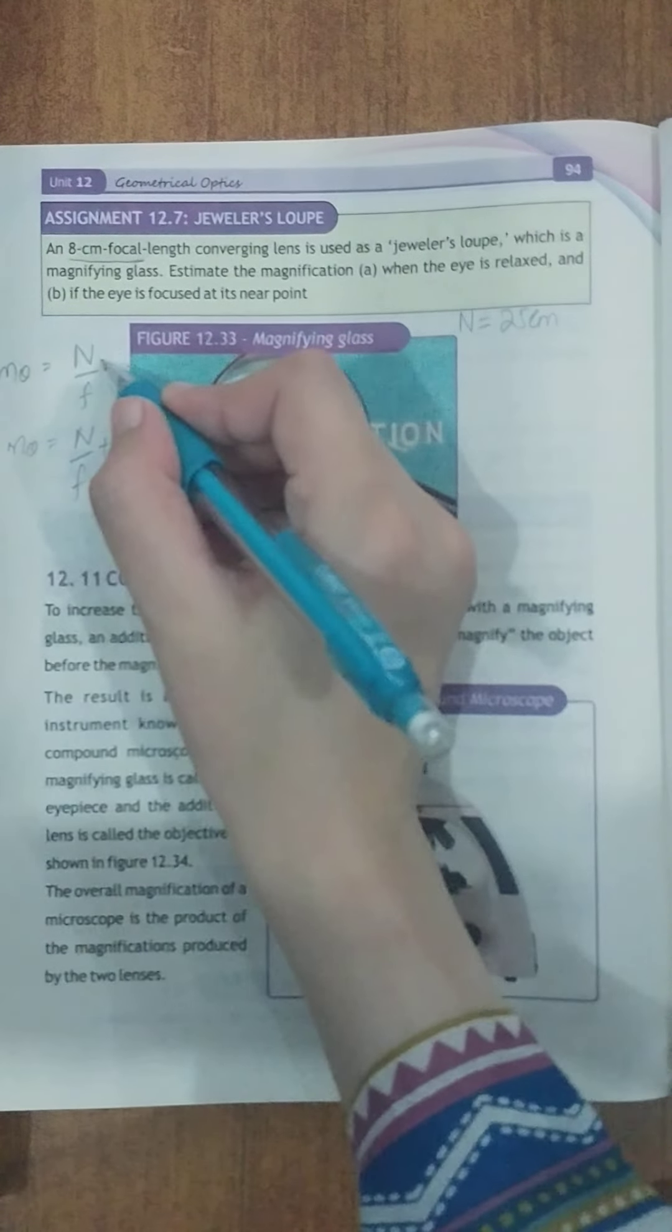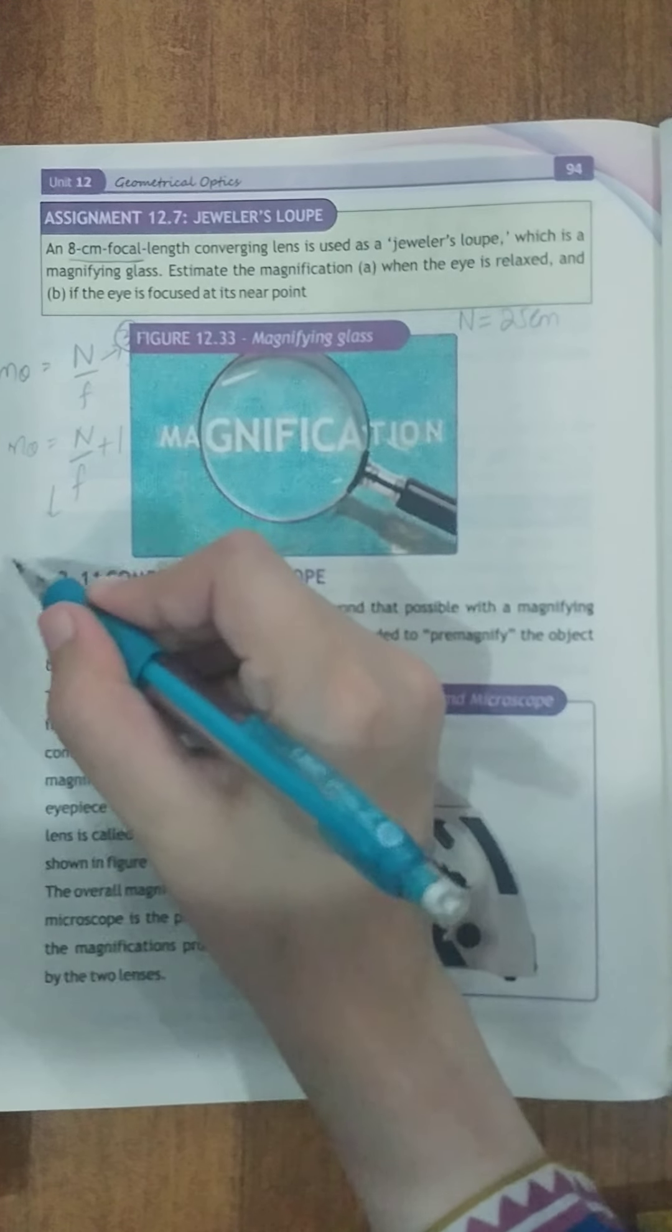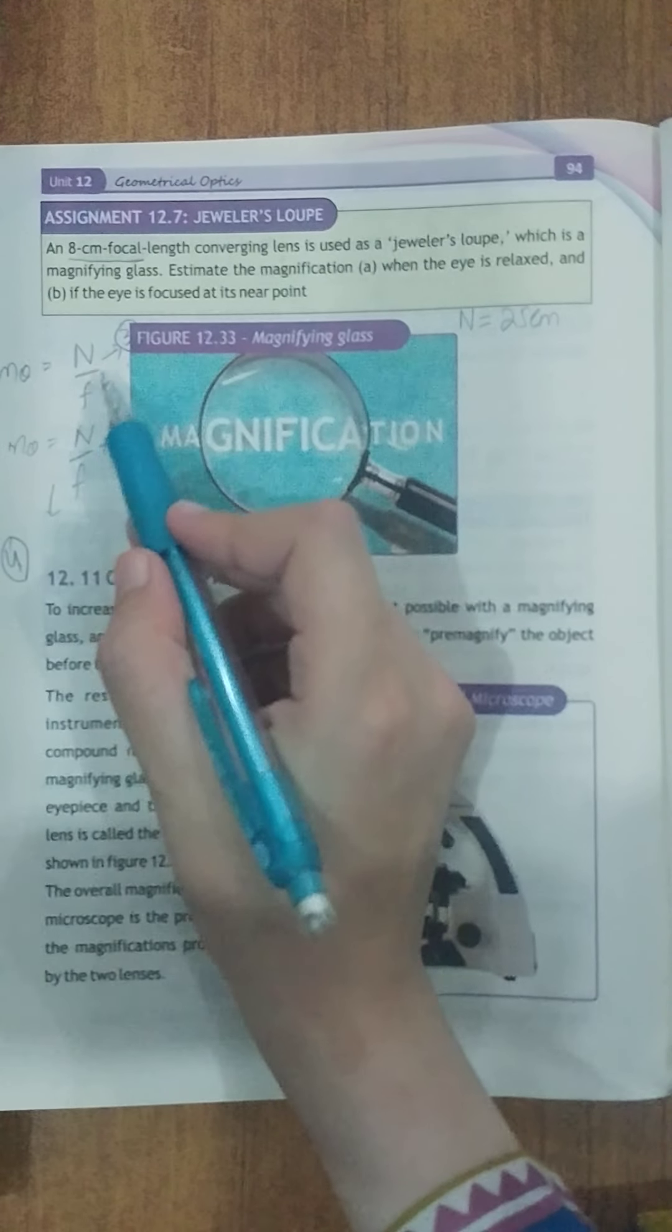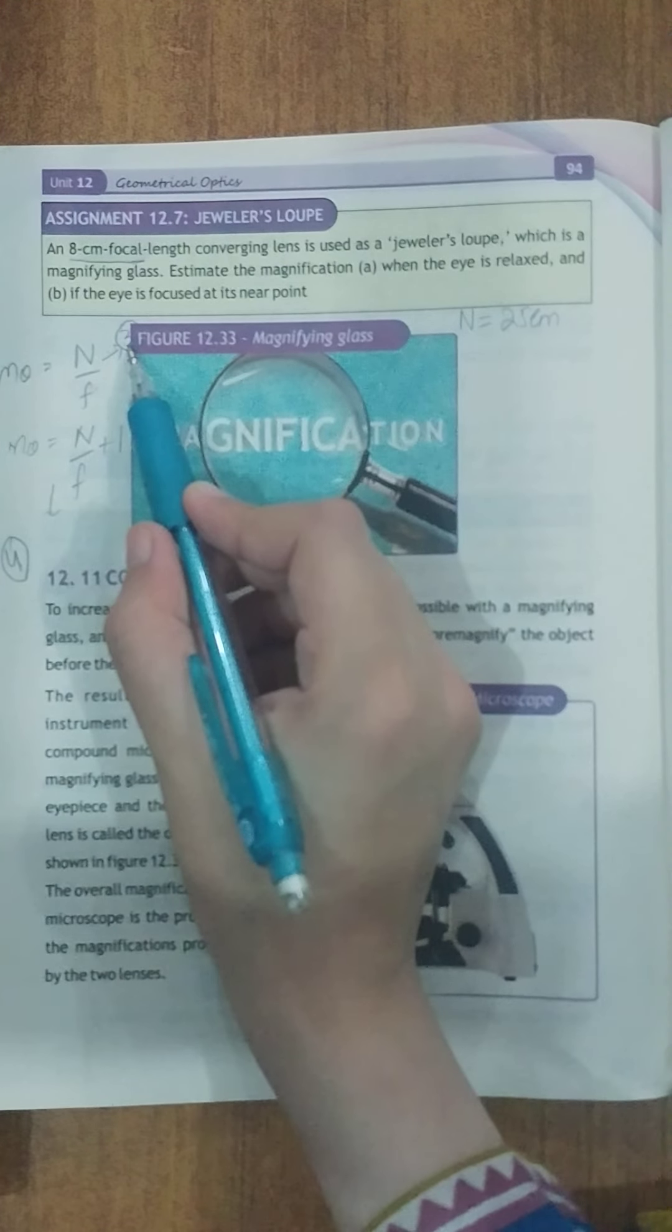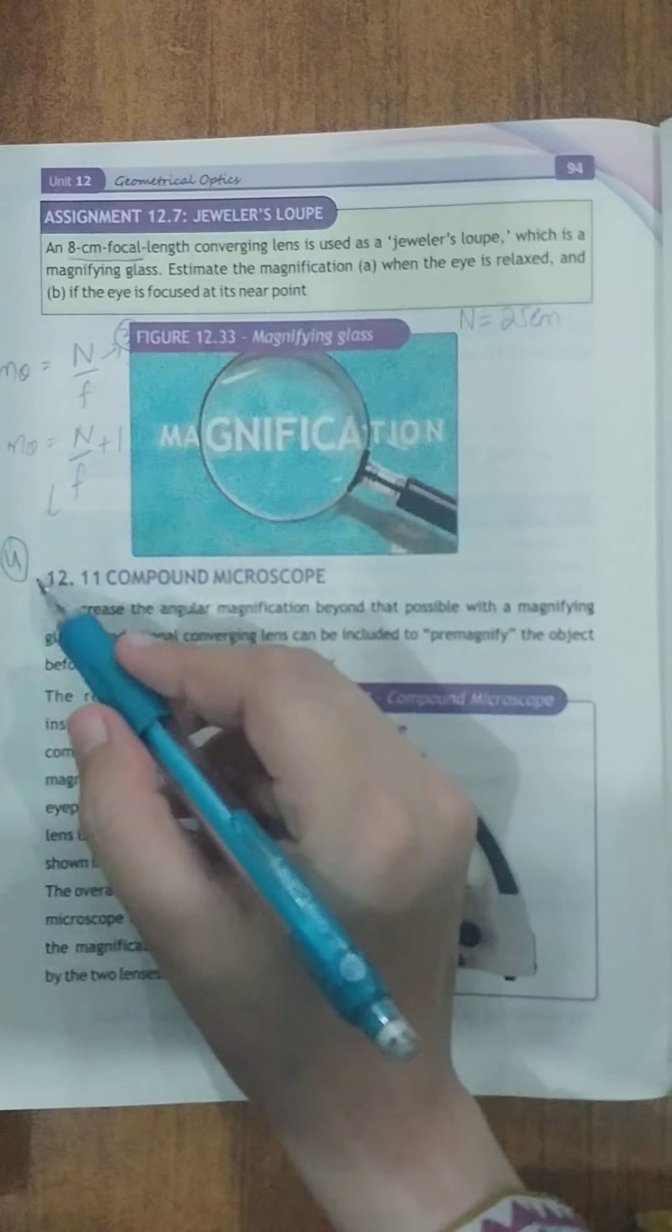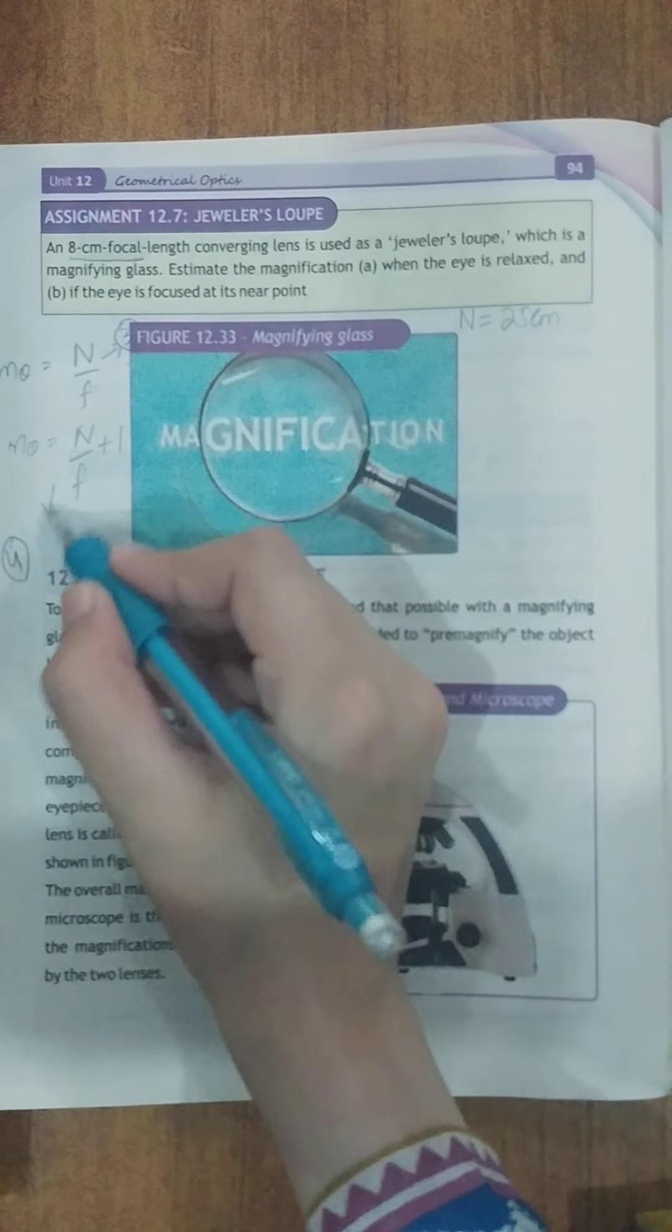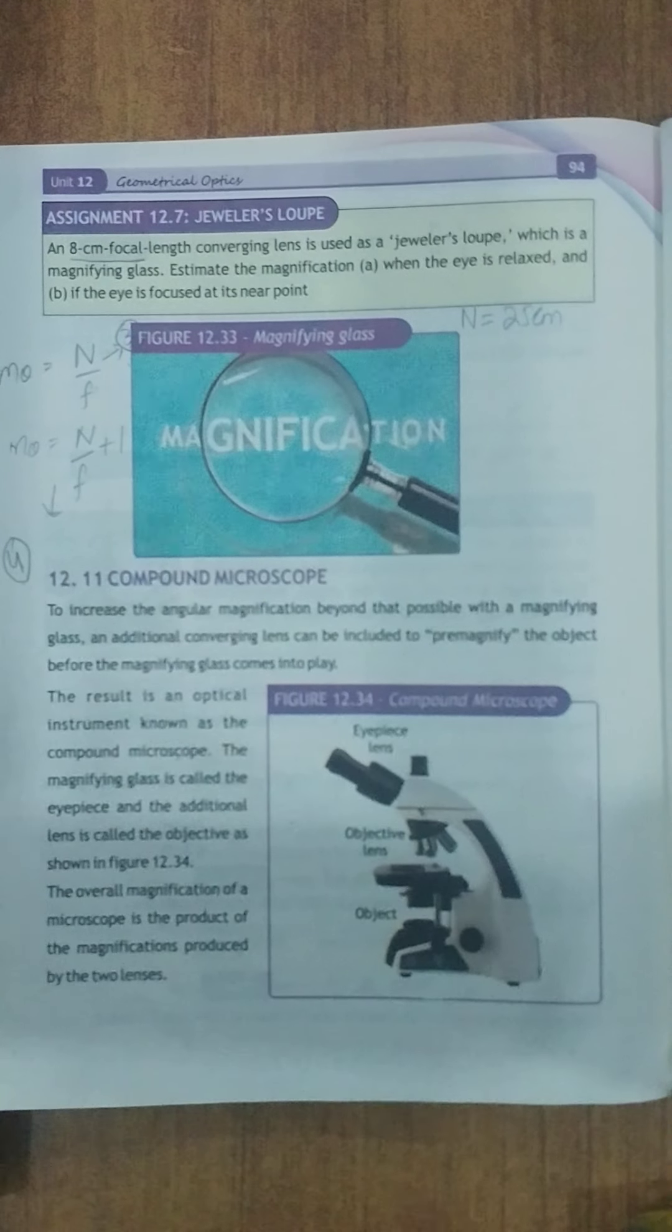Aapke paas jo first hai iska answer aapke paas 3 aayega aur second hai iska answer aapke paas 4 aayega. To jab eye relax hoti hai to vo 3 times aapko image show karega object ke magnified image aur agar aapke paas near uske liye image ke liye ye 4 times magnified hoga ye image. Theek hai umeed hai students aapko.